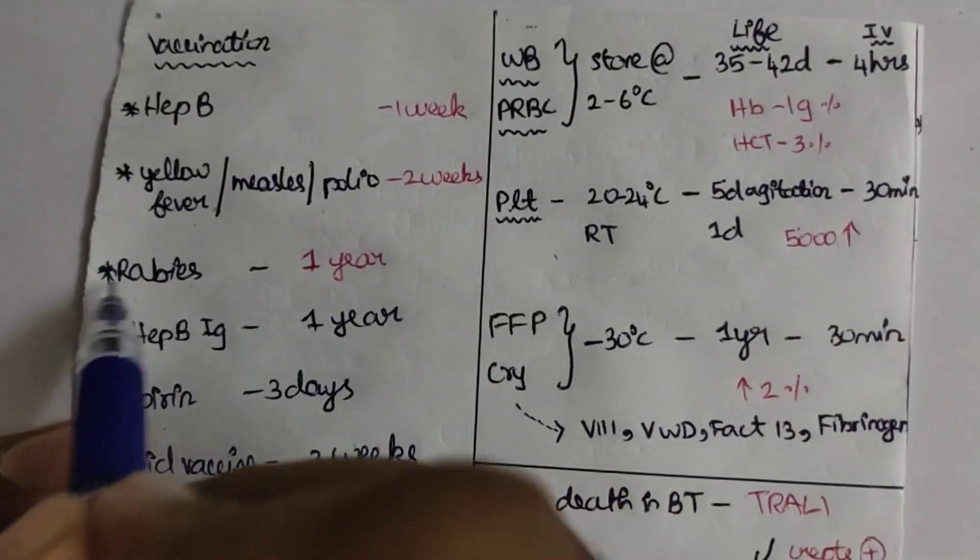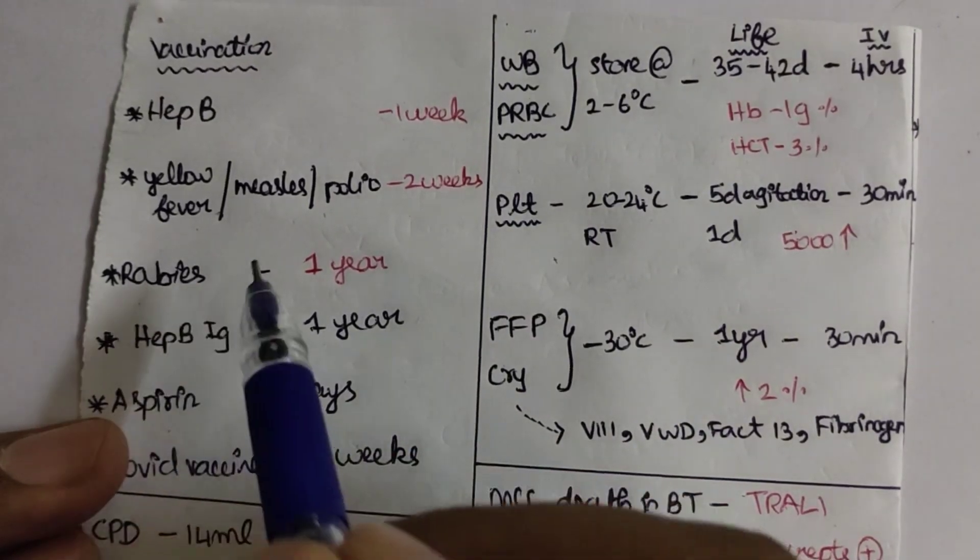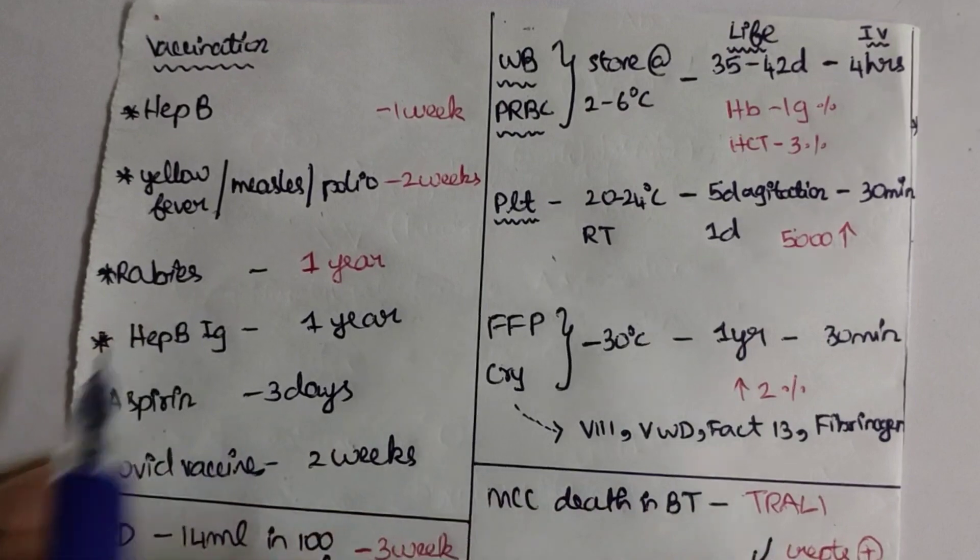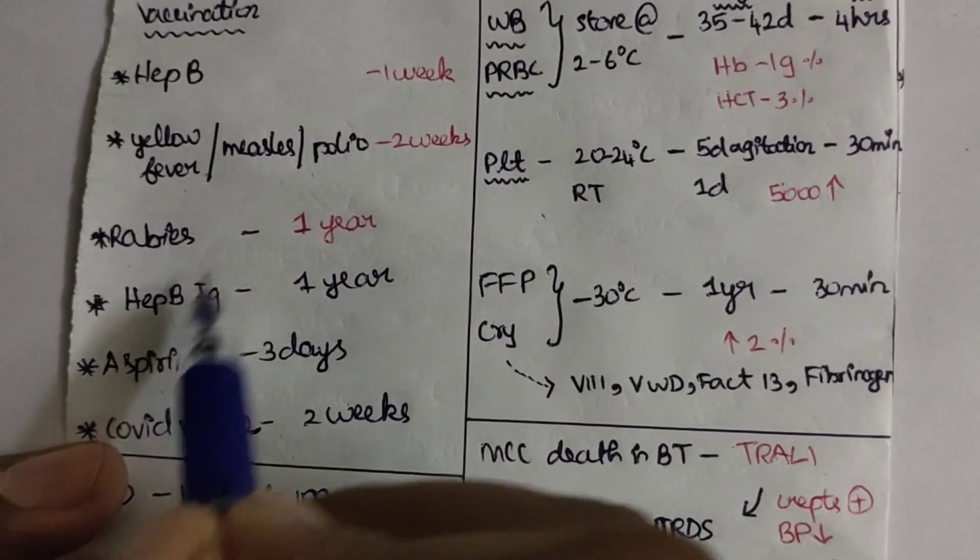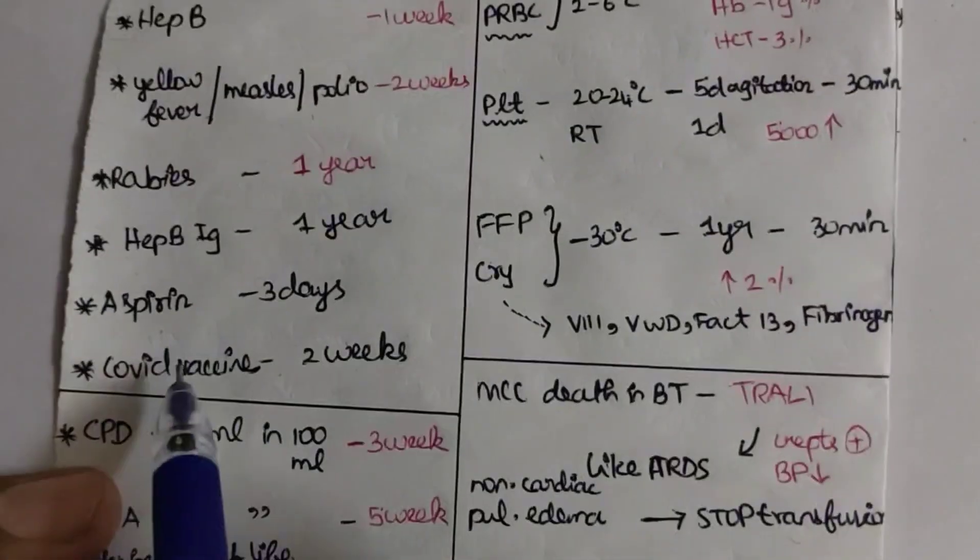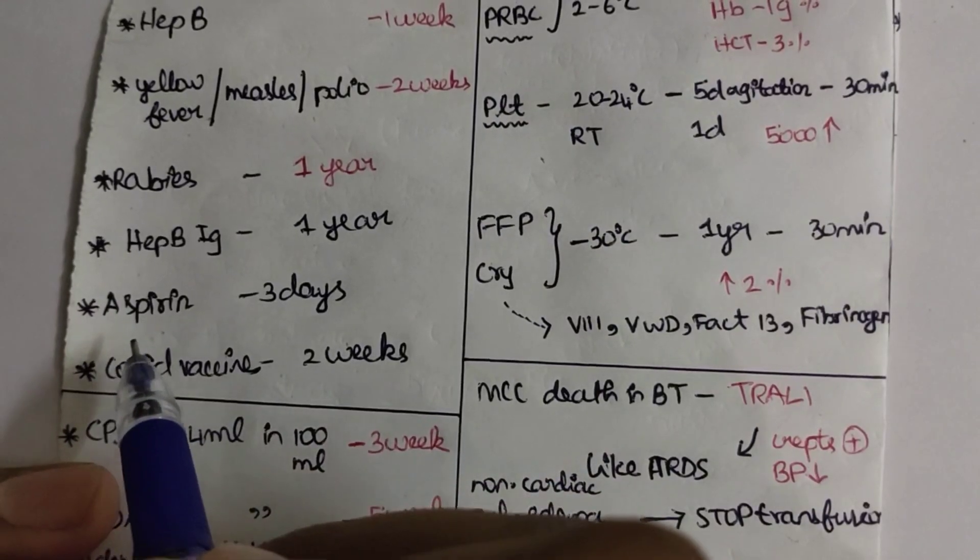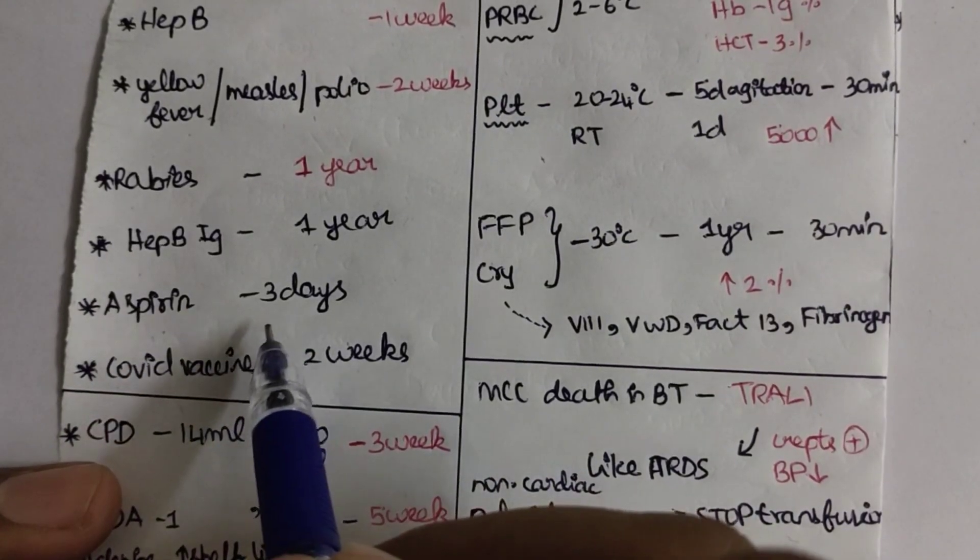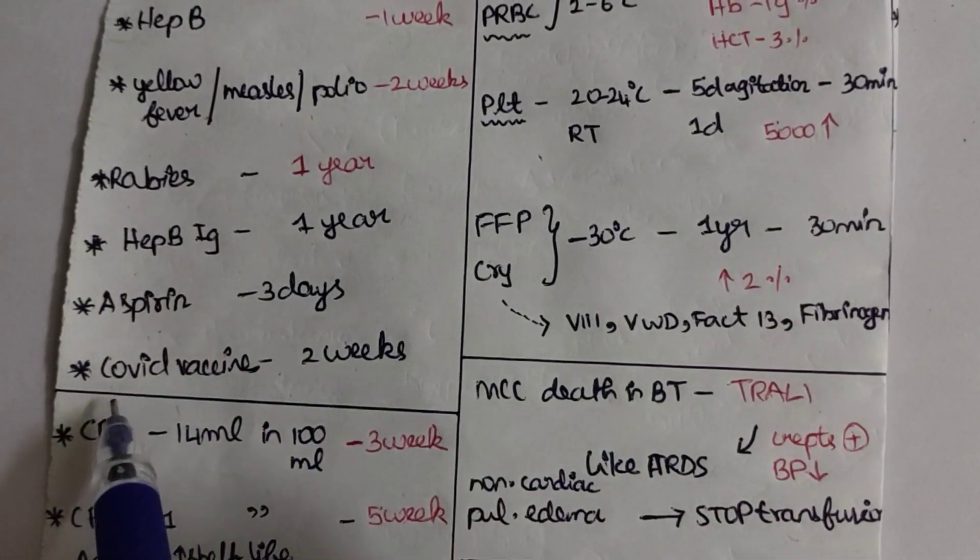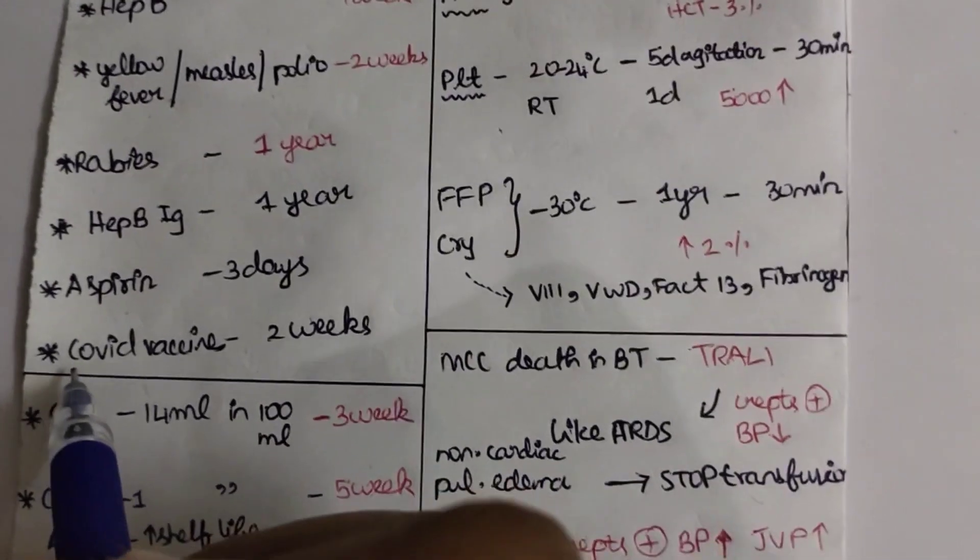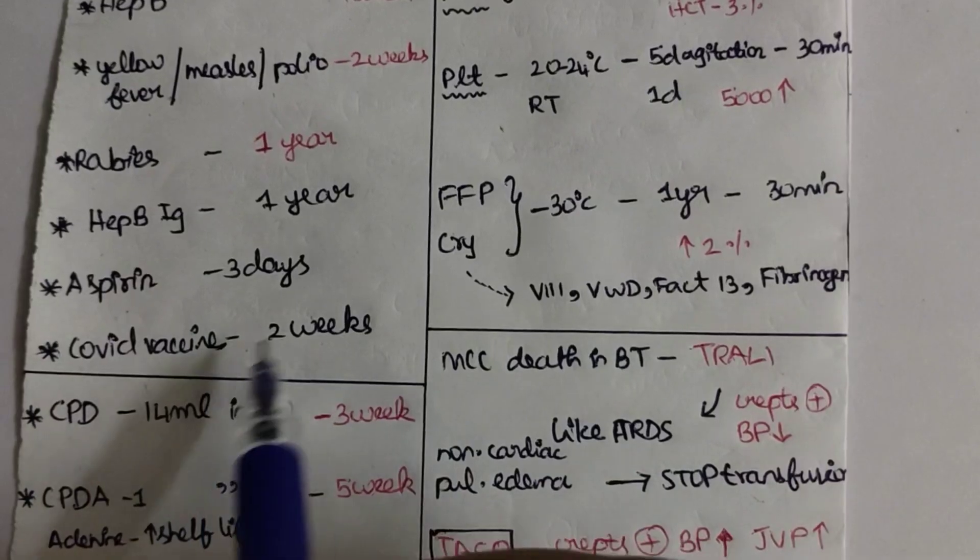If a patient takes rabies vaccine, they have to wait nearly one year to donate blood and blood products. If a patient takes HBV immunoglobulins, they also have to wait for one year. If a patient is on treatment with aspirin, they should be drug-free for nearly three days. For the COVID vaccine, you have to wait nearly two weeks to donate your blood.